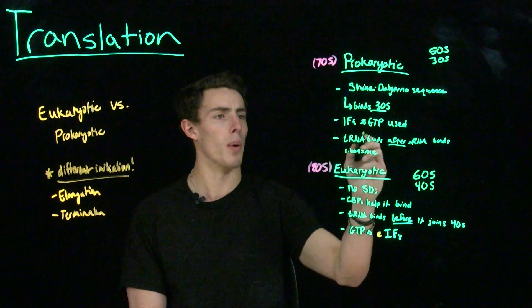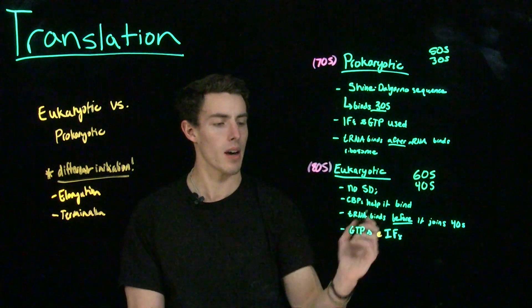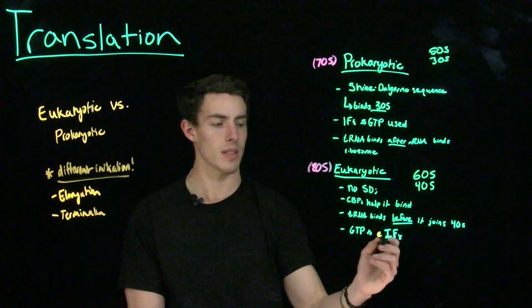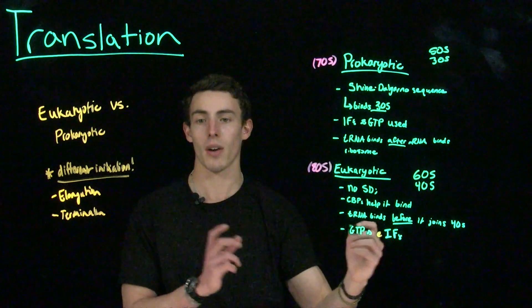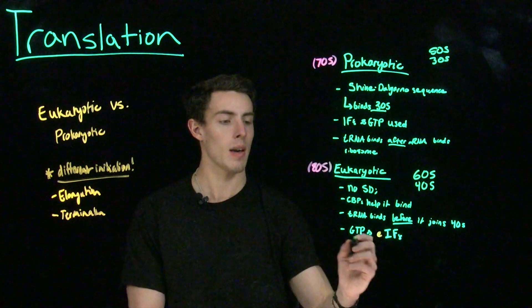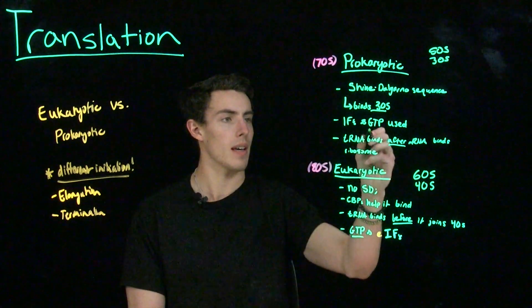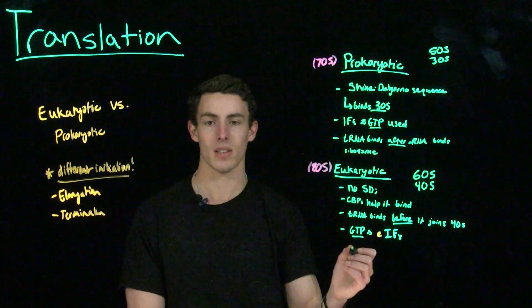Additionally, both use initiation factors and GTP. However, in eukaryotic cells, you would call these initiation factors EIFs because they're eukaryotic initiation factors. But something important to note is that GTP is going to be the energy source of translation.